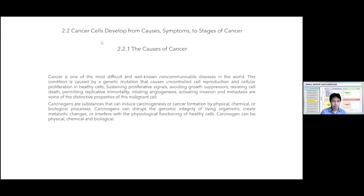Carcinogens are substances that can induce carcinogenesis or cancer formation by physical, chemical, or biological processes. Carcinogens can disturb the dynamic integrity of living organisms through metabolism or interfere with the physical and physiological functions of healthy cells. Carcinogens can be physical, chemical, and biological.